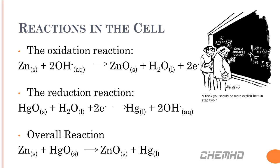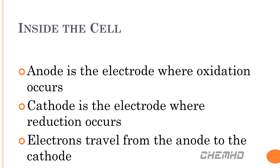Here are the reactions occurring within the cell. The oxidation reaction is solid zinc reacting with two aqueous hydroxide ions. This produces solid zinc oxide, liquid water, and two electrons. The reduction reaction produces liquid mercury and two aqueous hydroxide ions. The anode is where oxidation occurs, and the cathode is where reduction occurs. The electrons travel from the anode to the cathode, producing a current.